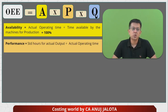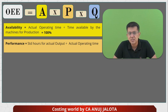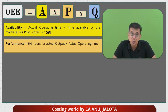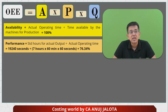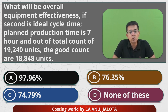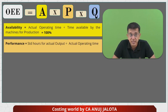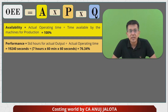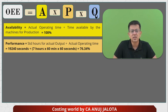The performance ratio — also called productivity or efficiency ratio — is calculated as standard hours for actual output divided by actual operating time. The gross output was 19,240 units, and since one unit takes one second, they should have taken 19,240 seconds. The actual operating time is seven hours, which is 7 × 60 × 60 seconds. So the performance ratio comes to 76.34%.